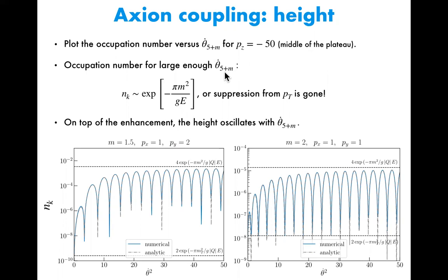We are plotting the height of the plateau versus the axion velocity, picking up the middle of the plateau. The x-axis is now the axion velocity and the y-axis is the occupation number. If you take the axion velocity to be zero, this corresponds to the previous formula from the standard case. Once you increase the axion velocity, it is enhanced a lot. Focusing on the envelope, it approaches a formula where the suppression factor coming from P_T is eventually gone, even if you consider non-zero P_T modes. The height also oscillates as a function of the axion velocity.